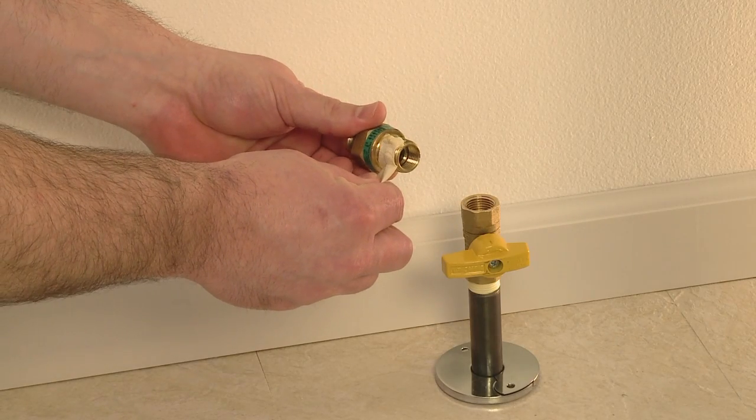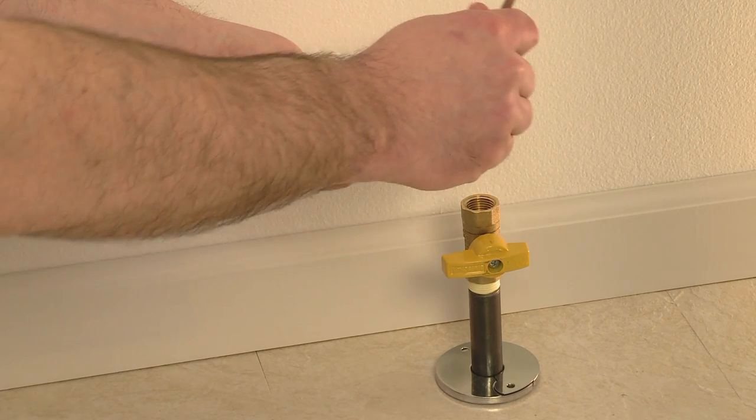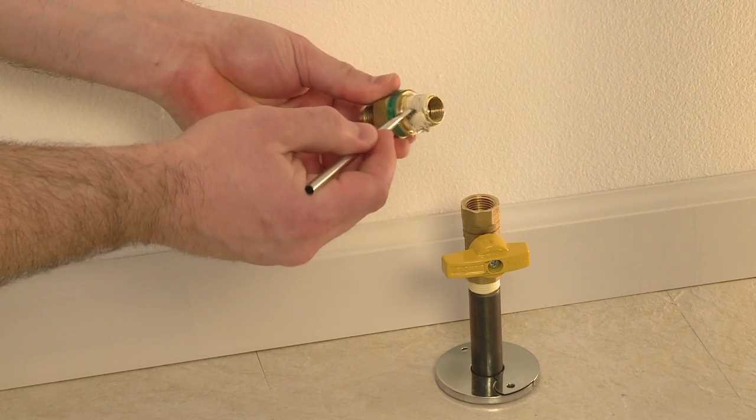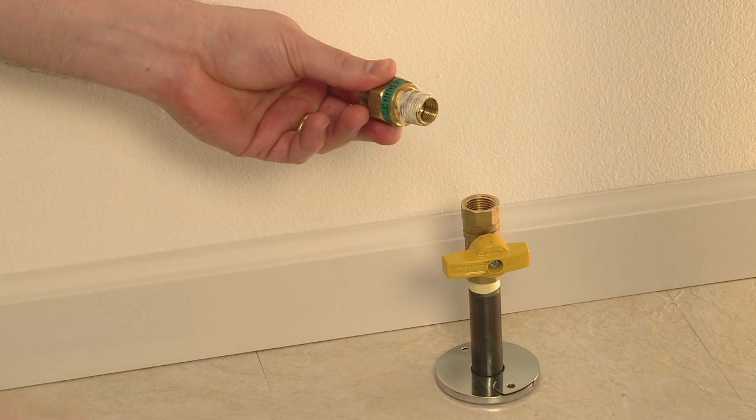Apply pipe thread sealant or yellow gas thread tape to the male threads of the excess flow valve. Remember thread sealant is only applied to the pipe threads. No sealant should be used on the flare threads of the fittings or inside the nuts of the gas appliance connector itself.